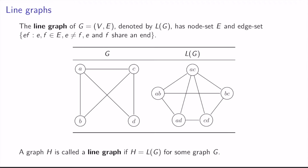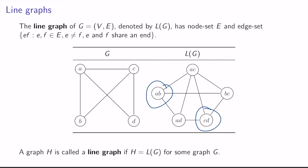Now if we look at two nodes, say AB and AC, they share an endpoint which is A, and so there's an edge joining them. But if we look at AB and CD, they do not share an endpoint — AB and CD are distinct nodes with no shared endpoint, so there's no edge joining them.